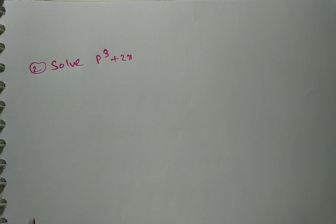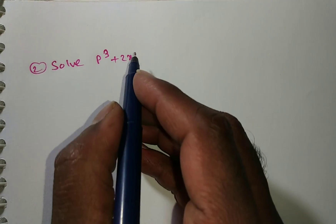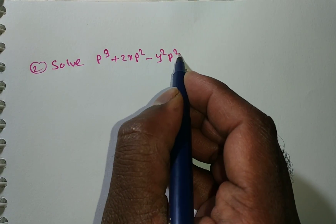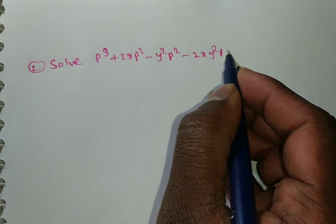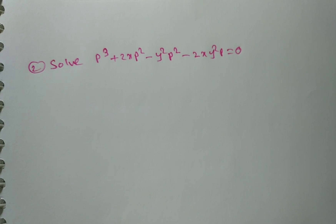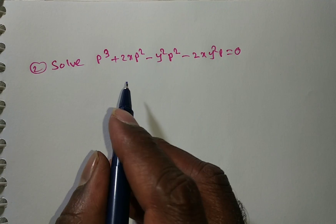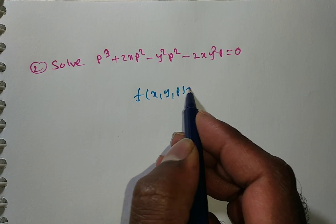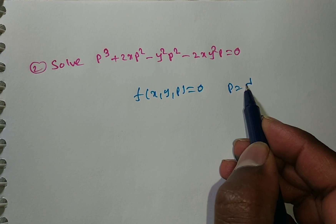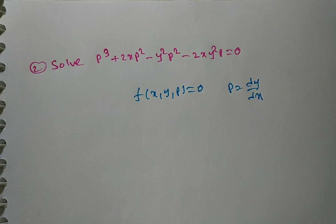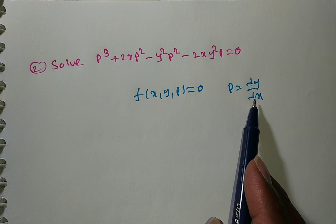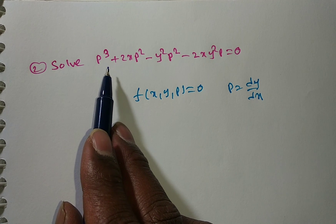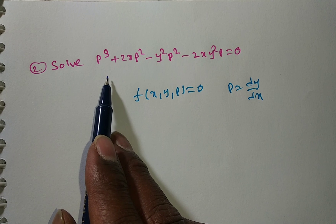Next problem: solve p cubed plus 2xp squared minus y squared p squared minus 2xy squared p equals zero. This is in the form f(x, y, p) equals zero where p equals dy/dx, so it is first order. The degree of p is 3, making it first order but not first degree.